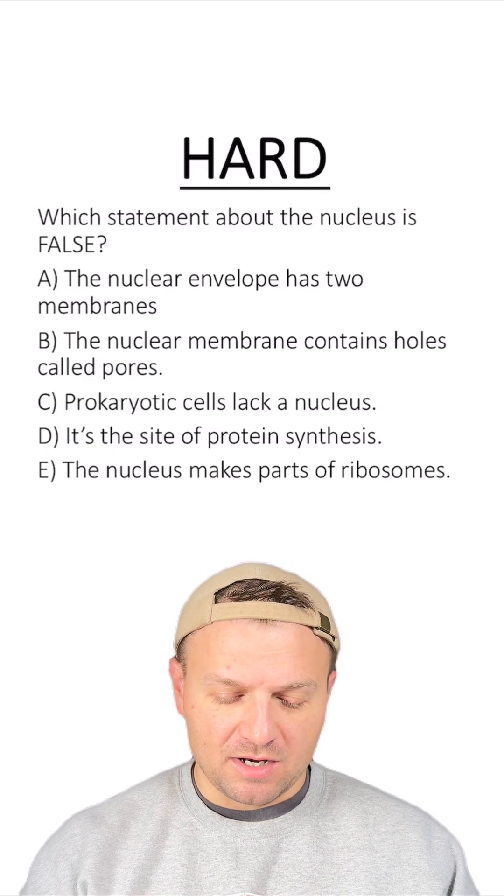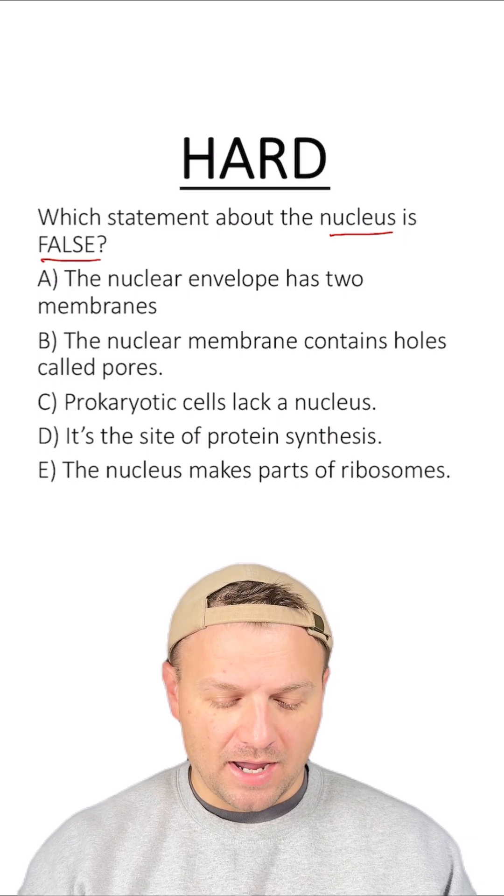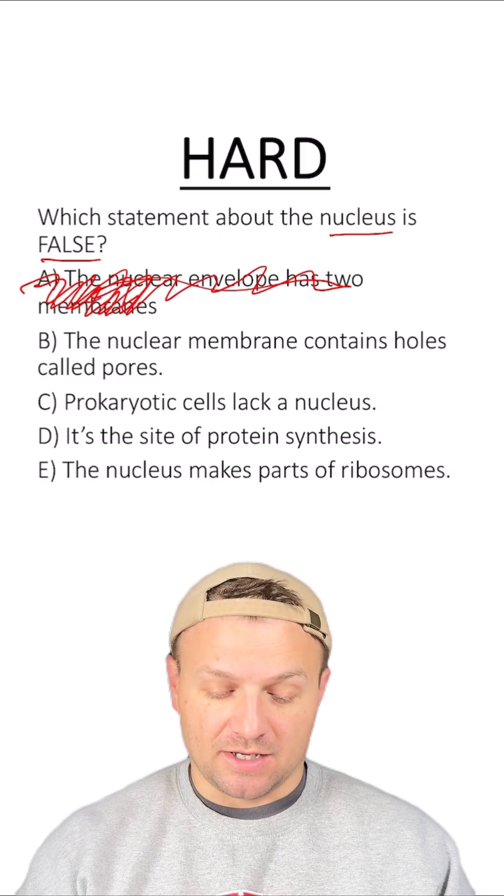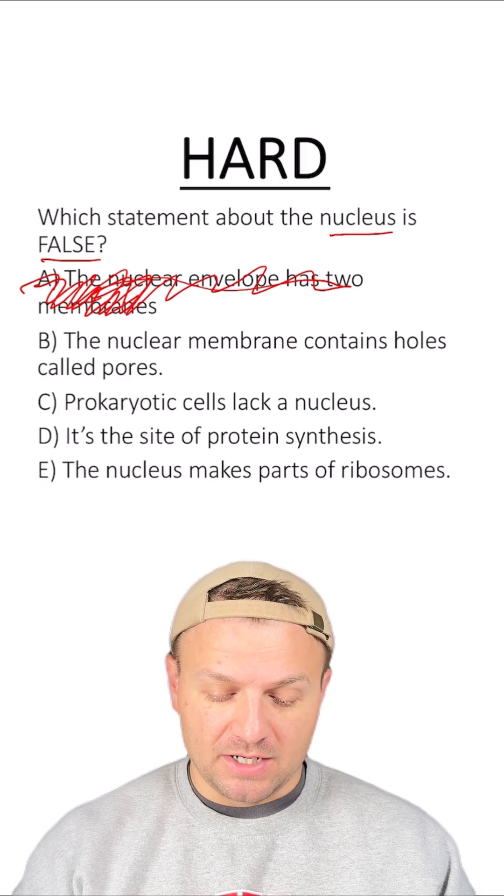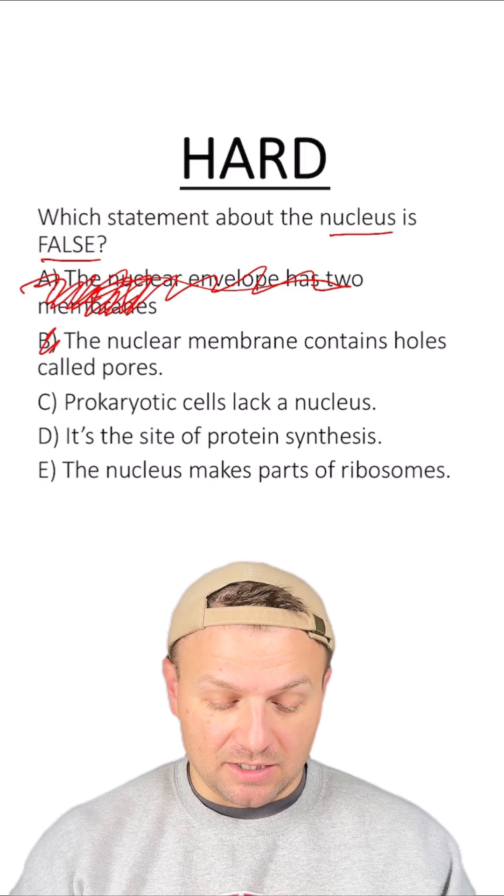And here's the hard question. Which statement about the nucleus is false? Option A: the nuclear envelope has two membranes. That's correct. The nucleus has two membranes, so this one's not the answer. Option B: the nuclear membrane contains holes called pores. That's right. That's how the mRNA leaves the nucleus.